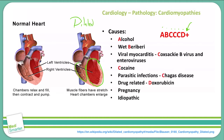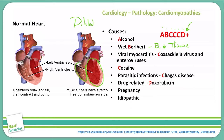A stands for alcohol. B is wet beriberi, which is due to a B1 deficiency — thiamine. C stands for coxsackie B virus, which along with enterovirus can cause viral myocarditis leading to dilated cardiomyopathy. The next C is cocaine, followed by Chagas disease — and other parasitic infections can also cause dilated cardiomyopathy. D stands for drugs, specifically doxorubicin, a cancer treatment drug whose side effects include dilated cardiomyopathy.